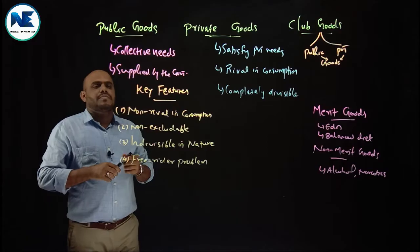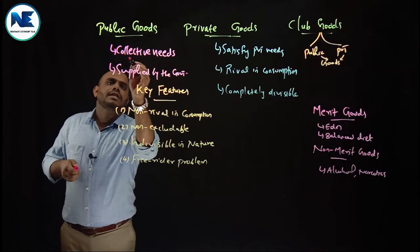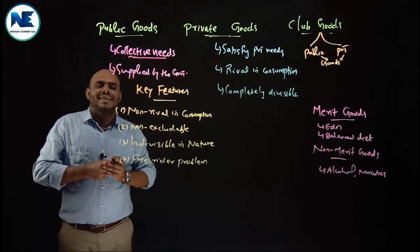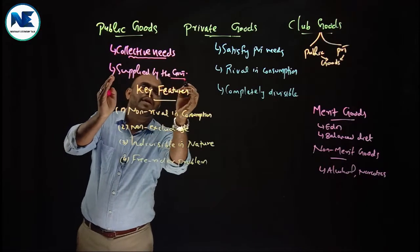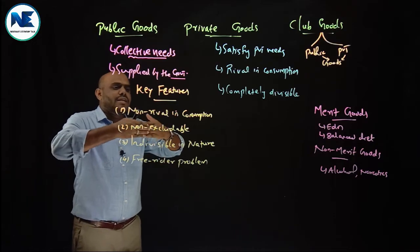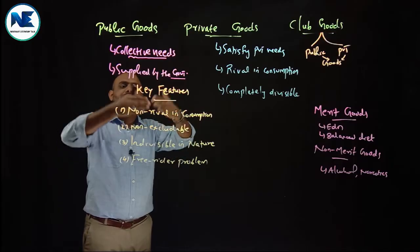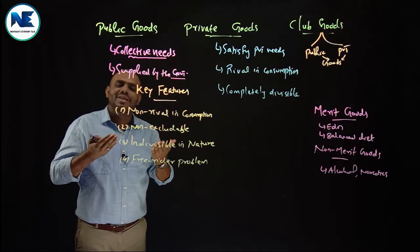In the case of Public Goods, the first point is that Public Goods are those goods which satisfy the collective needs of the society, and are supplied by the government or Public Authority. A typical example for Public Goods is Defence Service.